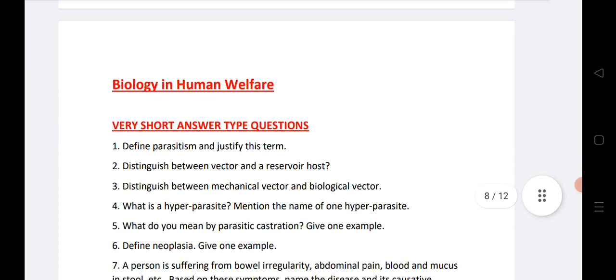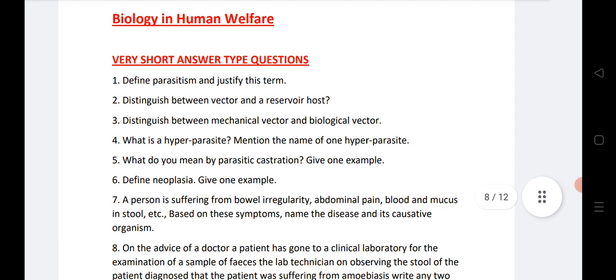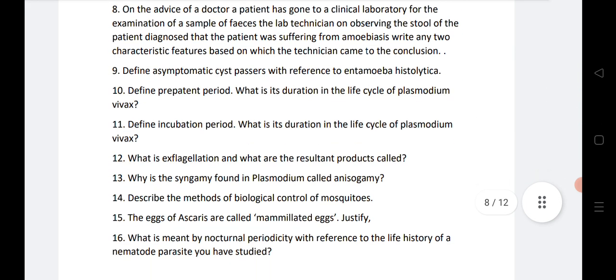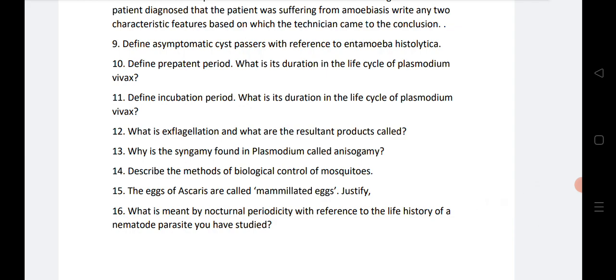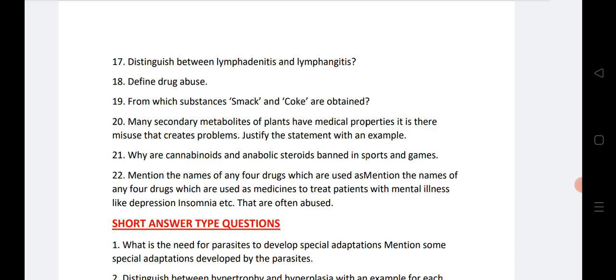Next chapter is very very important chapter, Biology in Human Welfare, very scoring chapter. Here 1 to 8 questions I have listed. Next after that we will see the remaining questions, 9 to 16. You can note it down. Next 17 to 22 questions.